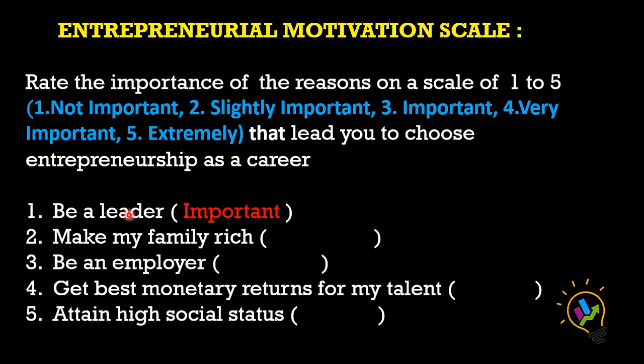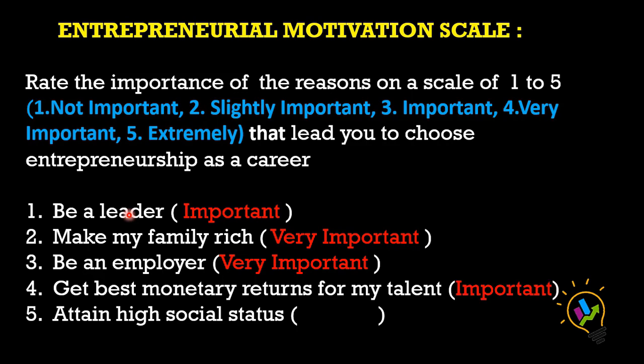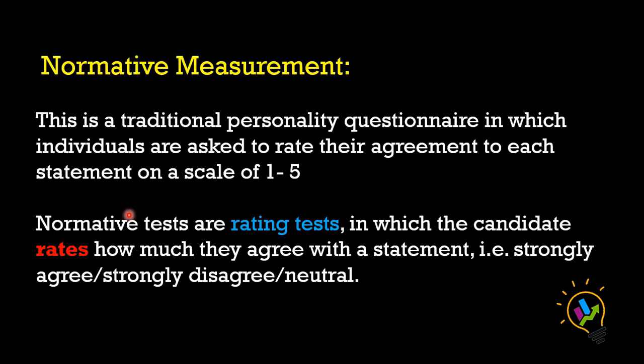For example, the respondent rates the first statement as important, second as very important, third as very important, fourth as important, and fifth as slightly important. Each statement is given a rating from one to five but not compared to each other. This way of rating is called normative measurement — a traditional personality question in which the individual is asked to rate their agreement to each statement on a scale of one to five.